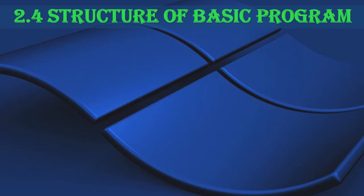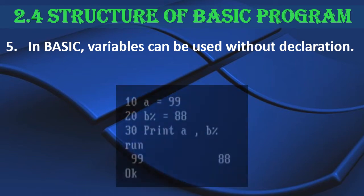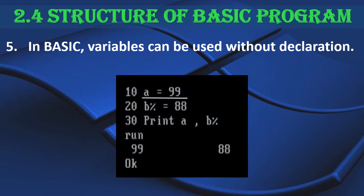Rule number five is that in BASIC, variables can be used without declaration. A variable means a memory place and declaration means definition. In some cases, without defining or mentioning the type of memory place, we can store values. For example, in line 10, I stored 99 in a place A without mentioning its type. In line 20, I declared B as an integer type where only integers can be stored. When executed, no error occurs and both values appear in the output.